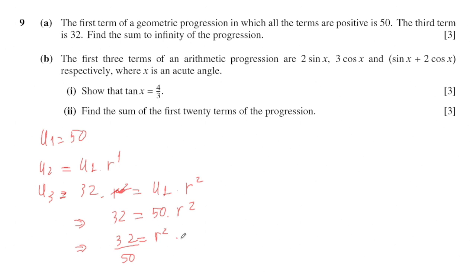Then it's quite easy to find r by taking the square root of 32 divided by 50, which gives plus and minus 0.8. But this sequence has all terms positive, so we cannot take the ratio with a negative value. So in conclusion, r will be equal to 0.8.